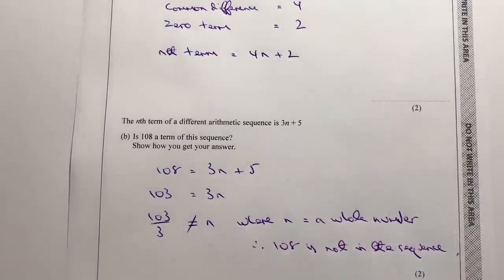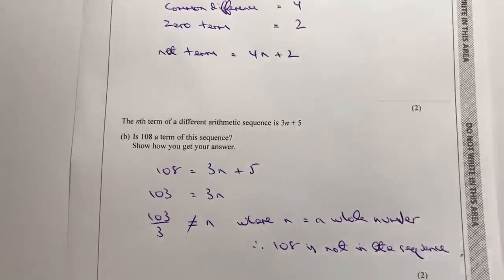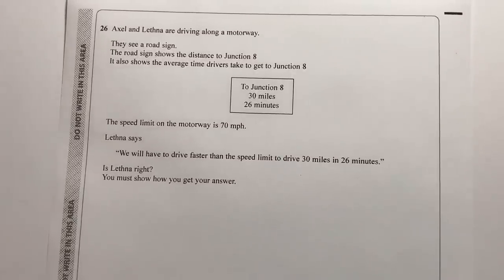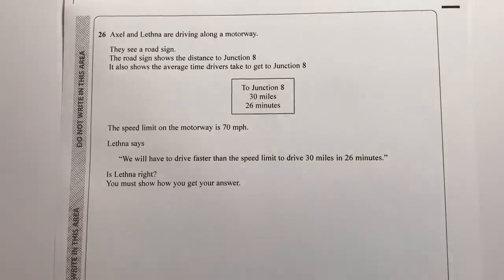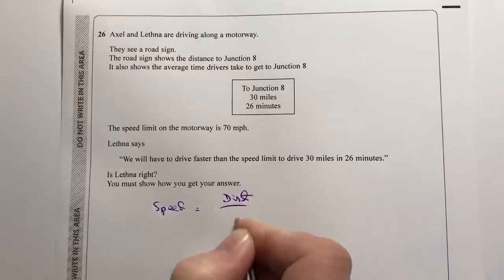The questions are getting a little trickier towards the end of the paper, but bear in mind that foundation level now goes up to level 5, so if you can work through these you're still going to get an extremely good GCSE result. Question 26 is fairly standard — it deals with speed, distance and time. I've spotted it's about speed, so I'll write down the formula: speed equals distance divided by time.